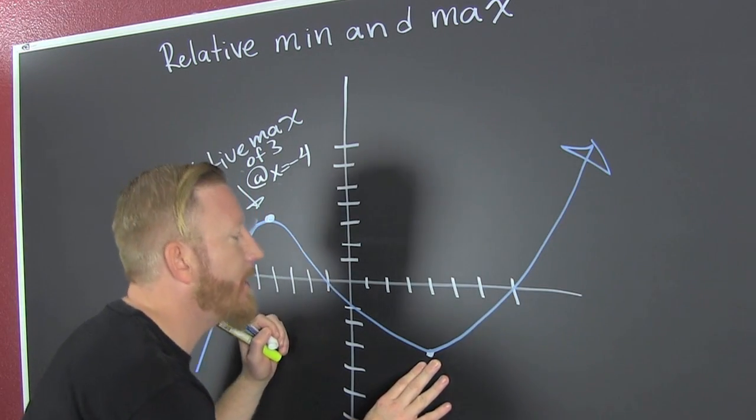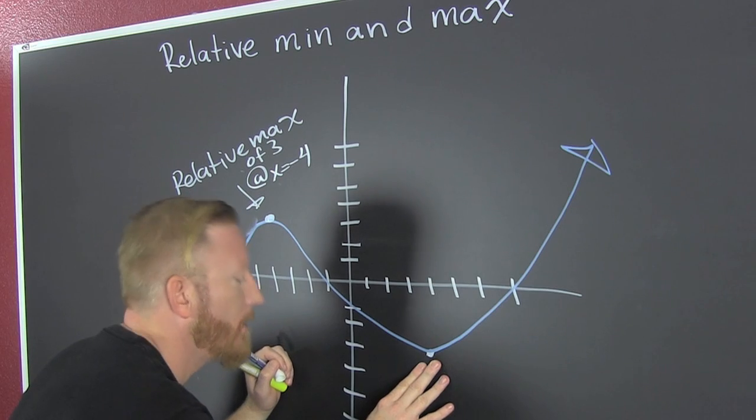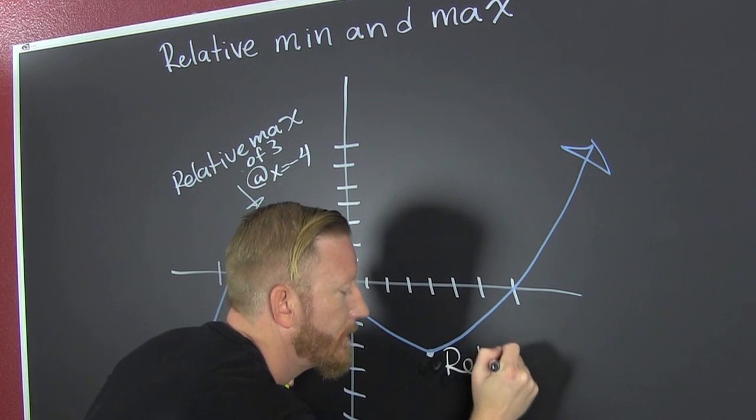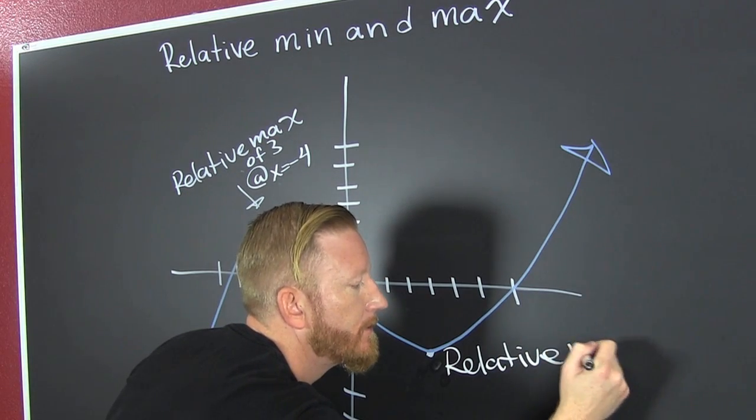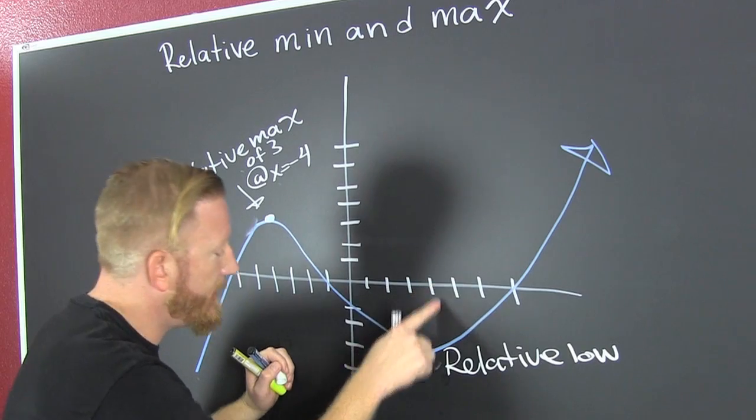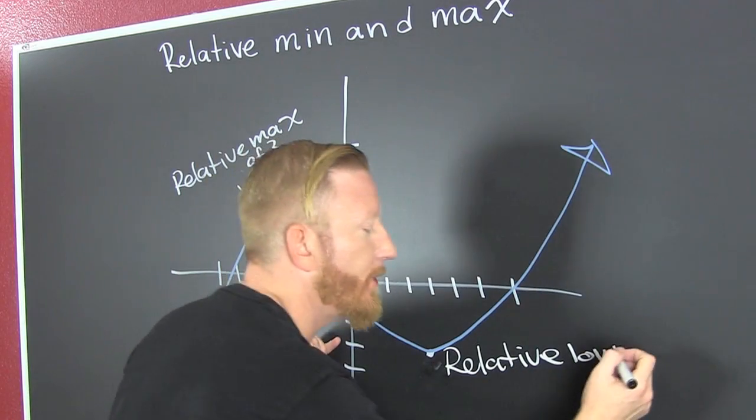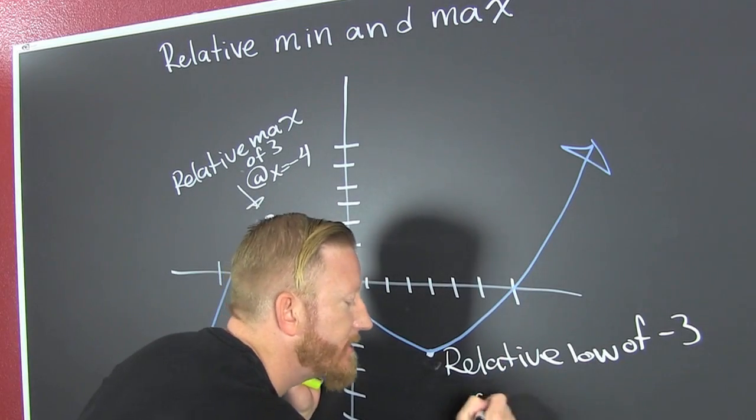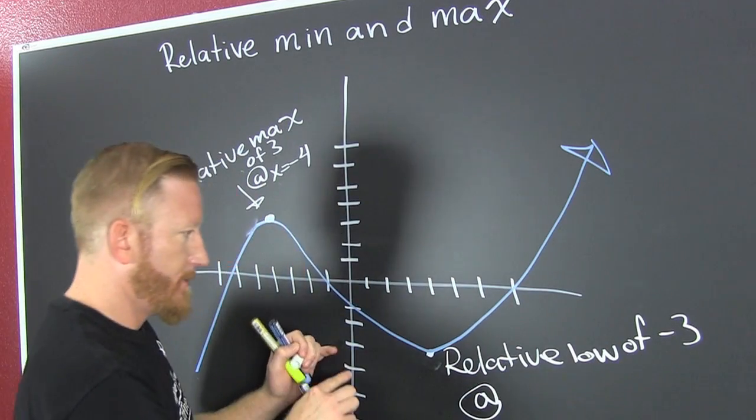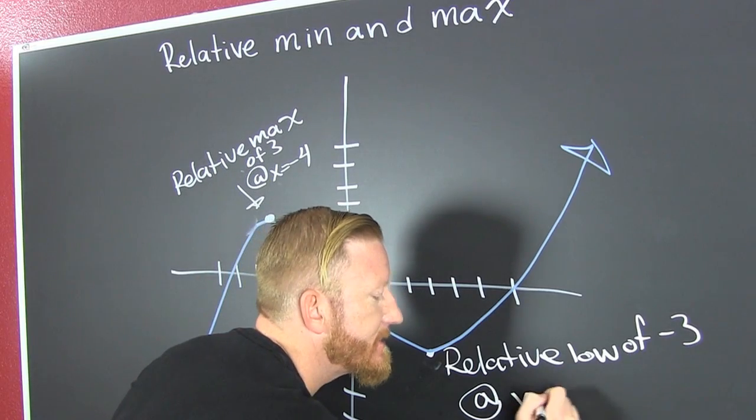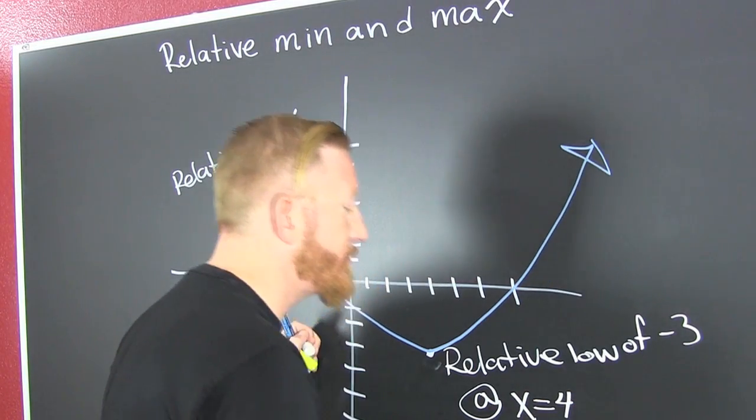Anyways, a relative low. The low is minus three, a relative low of minus three, and it occurs at what x value? One, two, three, four - it occurs at x is equal to four. And that's the short story.